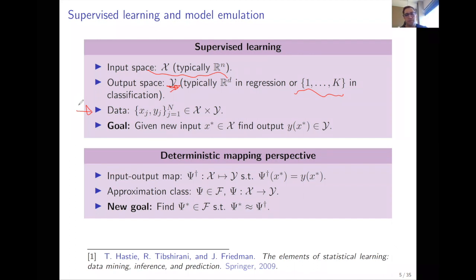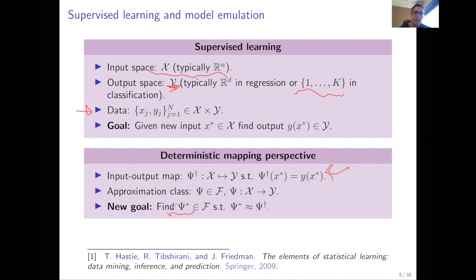From the deterministic mapping perspective, you assume there is some ground truth map psi-dagger from X to Y such that the output at any new input x-star is given by psi-dagger of x-star. In supervised learning, you take an approximation class F — these can be nonlinear maps with smoothness properties — and find some function psi-star in this class that is closest to psi-dagger.